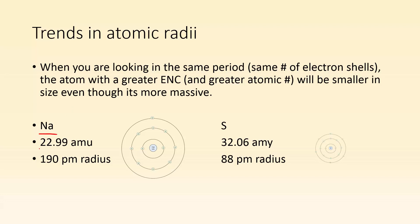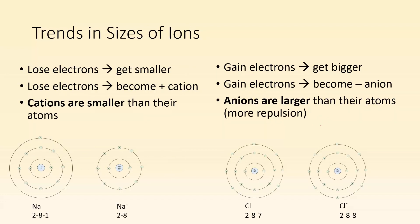If we take a look at sodium and sulfur, for example, sodium has a mass of 22.99 and a radius of 190 picometers. Whereas sulfur, same period, is heavier but smaller. Sodium, this electron is feeling a plus one pull, whereas all of these are feeling a plus six pull. So you can see sulfur is going to be a lot smaller than sodium.